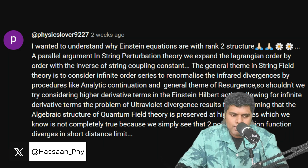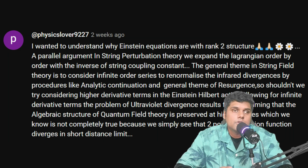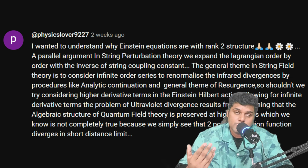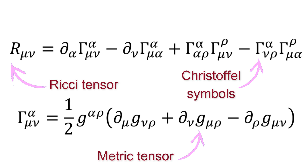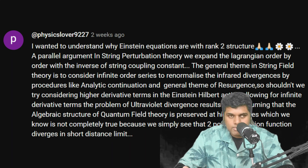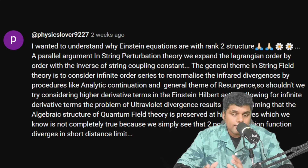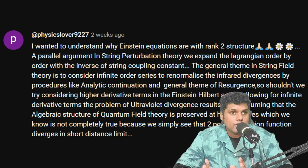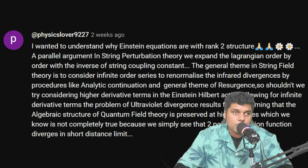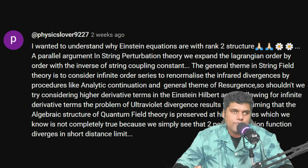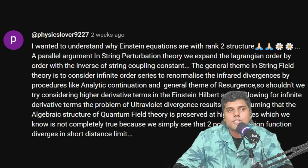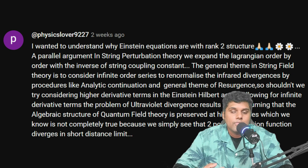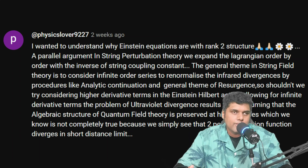The Ricci tensor contains the second derivatives of the metric tensor, so Einstein field equations have a second-derivative structure because it is the simplest consistent equation you can write for a general-relativity-like theory. However, you can add higher-derivative terms, and we do consider them. There is a whole field called general relativity as an effective field theory.